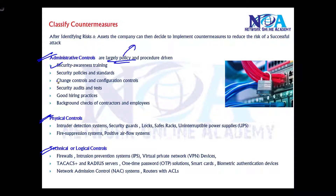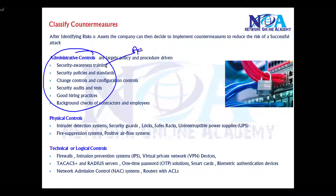Administrative controls include providing security awareness training to end users, following standard security policies, and maintaining good hiring practices — such as doing background verifications of contractors or employees before hiring them. This also includes conducting security audits and implementing change controls. Essentially, administrative controls deal with managing people and resources and following best practices to ensure we don't have vulnerabilities arising from people.